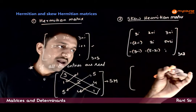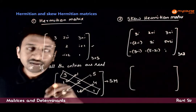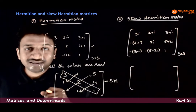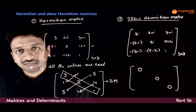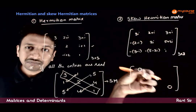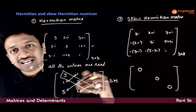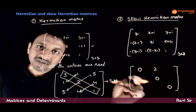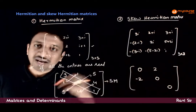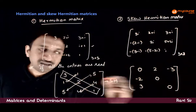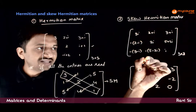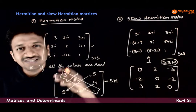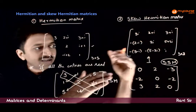For a skew Hermitian matrix with all real entries: the diagonal elements must be purely imaginary, but if entries are real they must be zero — since zero is both purely real and purely imaginary. For the non-diagonal elements, if one entry is 2 the opposite becomes −2, and if one entry is −3 the opposite becomes +3. So a skew Hermitian matrix with all real entries becomes a skew symmetric matrix. That is the parallel between symmetric and Hermitian, and skew symmetric and skew Hermitian.